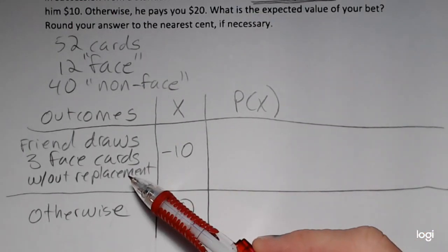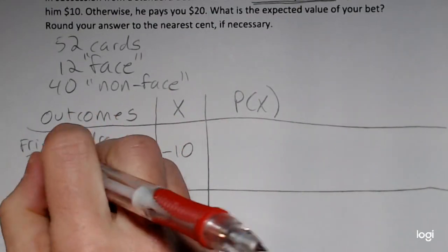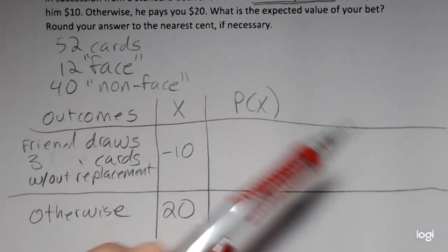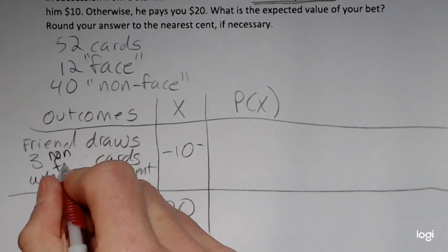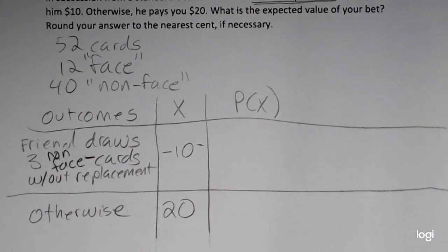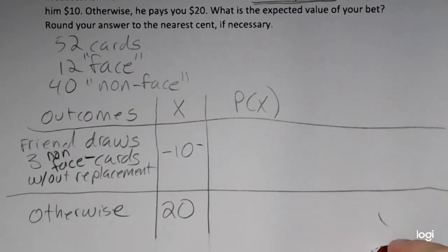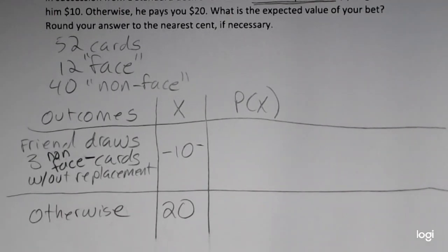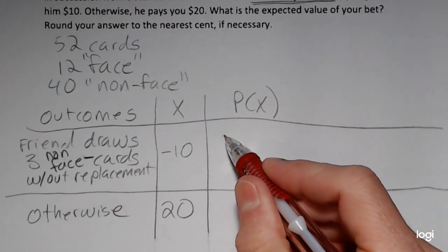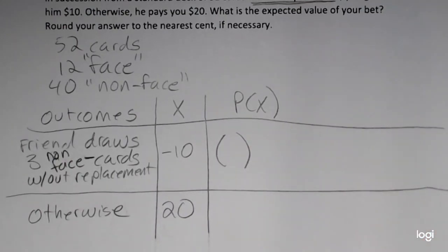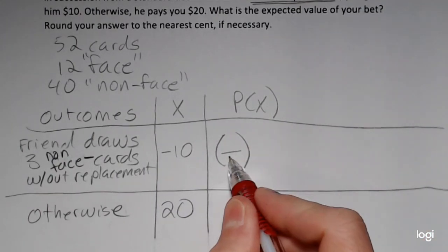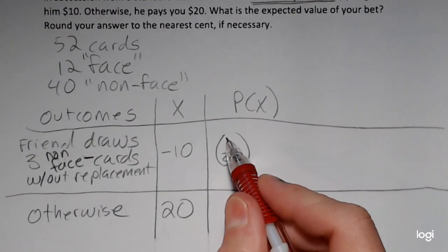If the friend draws three, this needs to be non-face cards. My apologies. They don't make these kinds of problems straightforward, unfortunately. So if the friend draws three non-face cards without replacement, the and rule for probability is implied. It means that the first card is a non-face card, and the second and the third. So I'm going to be multiplying. So the probability that the first card is a non-face card, and I have 52 cards altogether, this first factor is going to be 40 out of 52.